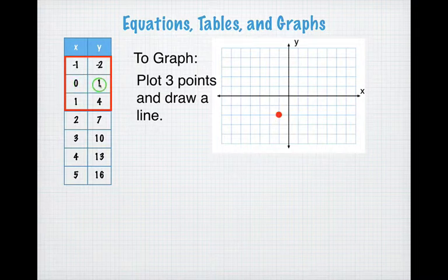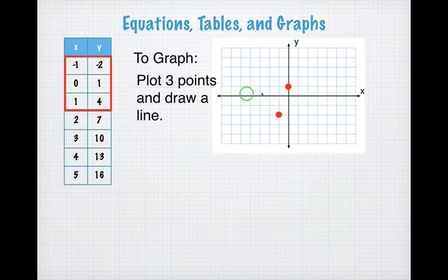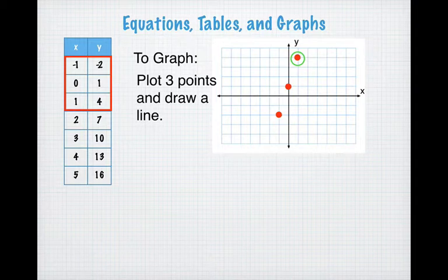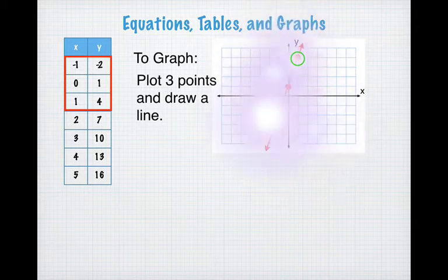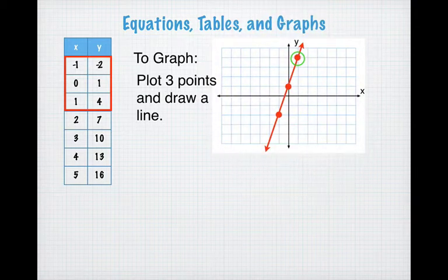The next point is (0, 1): x is 0, y is 1 — that would be right there. And the third point is (1, 4) — that's that point right there. Then you draw a straight line through these three points. A good way to draw a straight line is to use your ID card — it's a great straight edge, and you can draw yourself a nice straight line.